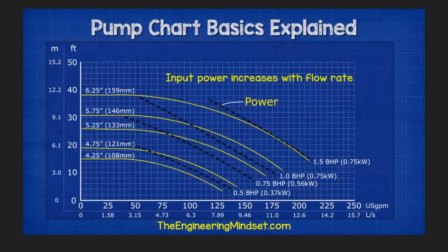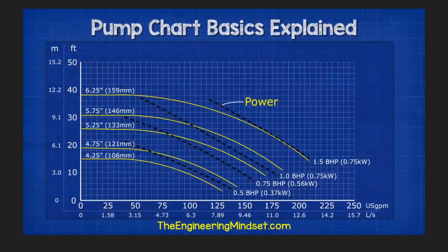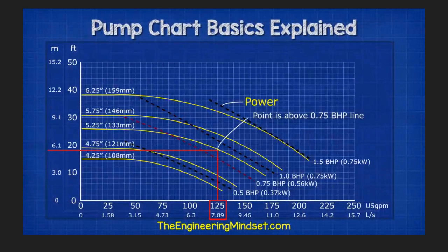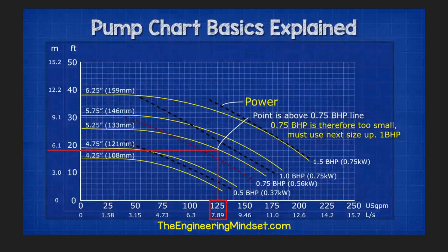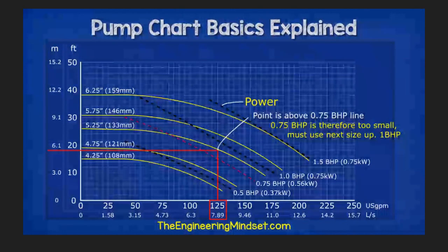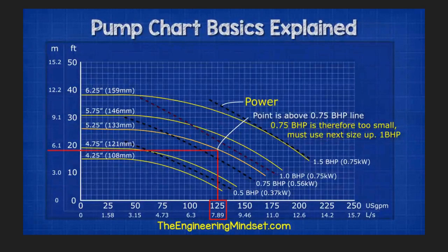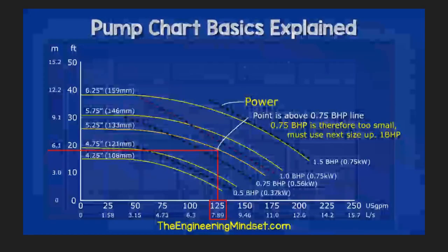As the flow rate increases, so does the power requirement. We use this chart to size our motor. For example, if we needed 125 gallons per minute with 18 feet of head, then this falls between the 0.75 and the 1 horsepower lines. Since this point is above the 0.75 line, we cannot use a motor of that rating. Therefore we will have to use a one brake horsepower motor, and the performance curve falls completely under this line, providing some safety margin if head pressure calculations are off.